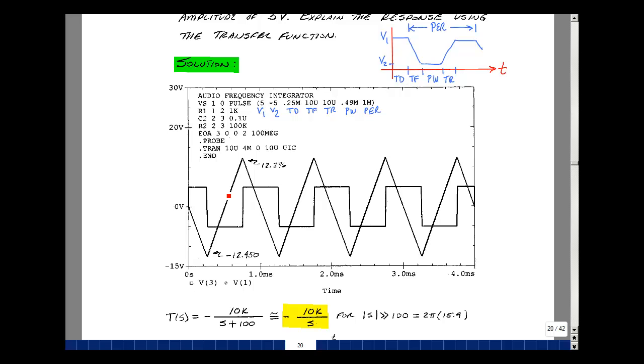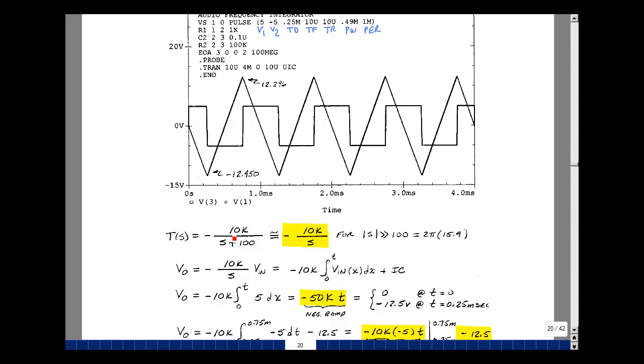I've got a triangle wave. It's going between roughly minus 12.45 and 12.3. Let's use our transfer function to explain why we're seeing a triangle wave. Our transfer function is minus 10k over s plus 100. And if the frequency is high enough, we can ignore the 100. So if our frequency is greater than 15.9 hertz, this term is very small. So we roughly have our transfer function as minus 10k over s. What's 1 over s? It's equal to an integral.